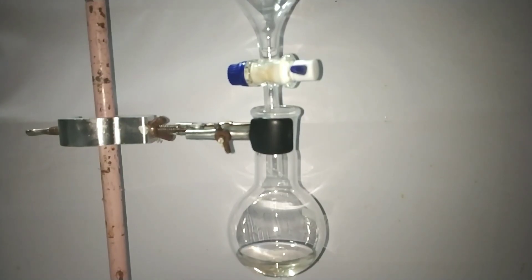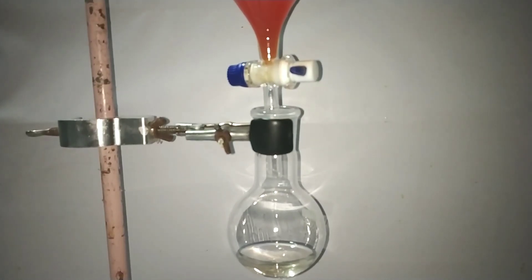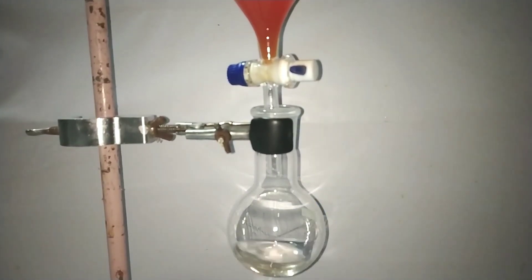Now we set up a separatory funnel on top of the round bottom flask containing the acetanilide and ethanol. Make sure the knob of the separatory funnel is closed.